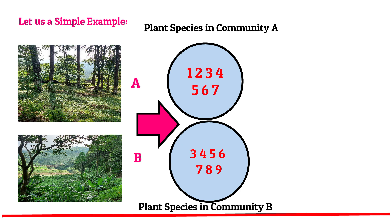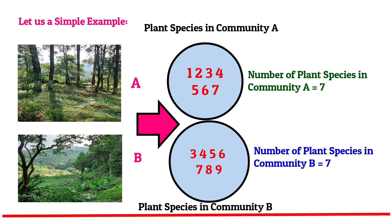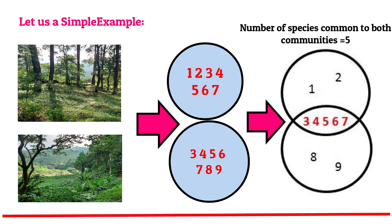Based on data collected in our hypothetical study, the number of species present in plant community A is seven, and the number of species in plant community B is also seven. The number of species common to both communities is five — species 3, 4, 5, 6, and 7. The next step is to determine the level of similarity between the two communities, which we do by applying the Sorensen Similarity Index formula.